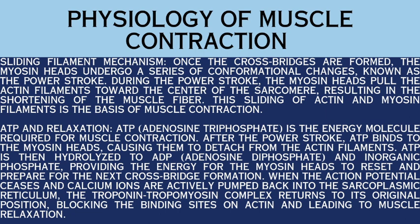Sixth, ATP and relaxation — ATP (adenosine triphosphate) is the energy molecule required for muscle contraction. After the power stroke, ATP binds to the myosin heads, causing them to detach from the actin filaments. ATP is then hydrolyzed to ADP (adenosine diphosphate) and inorganic phosphate, providing energy for the myosin heads to reset for the next cross-bridge formation. When the action potential ceases and calcium ions are pumped back into the sarcoplasmic reticulum, the troponin-tropomyosin complex returns to its original position, blocking actin binding sites and leading to muscle relaxation.